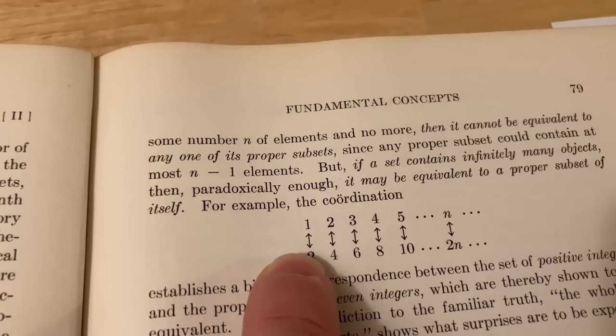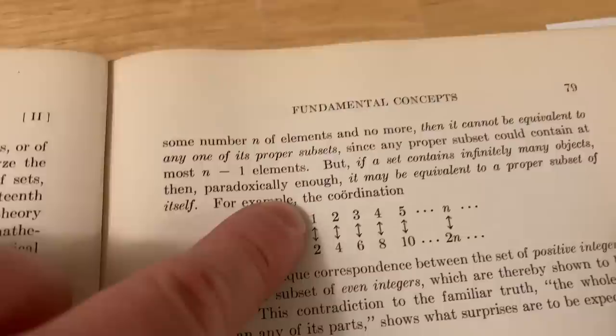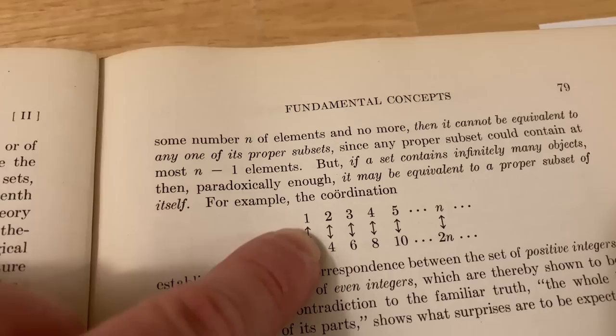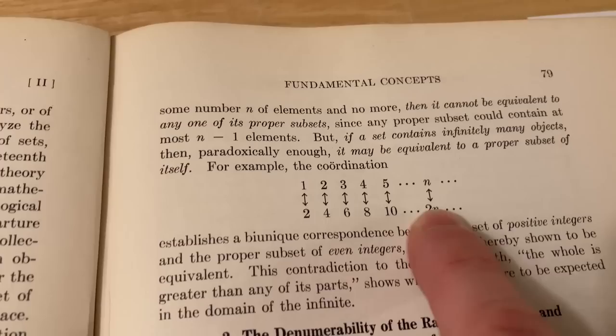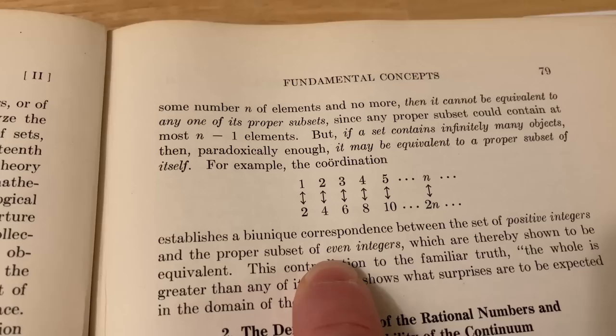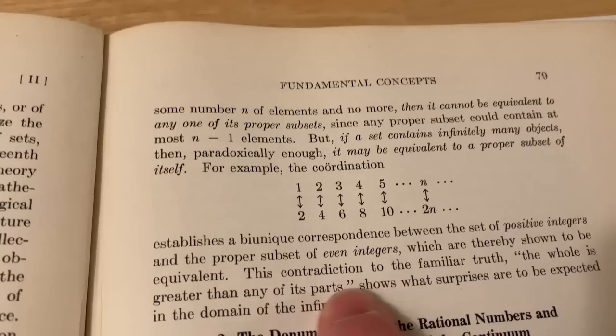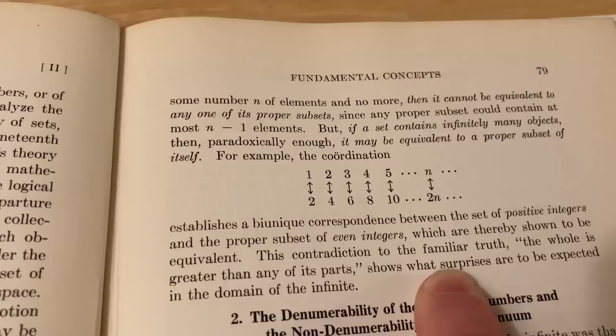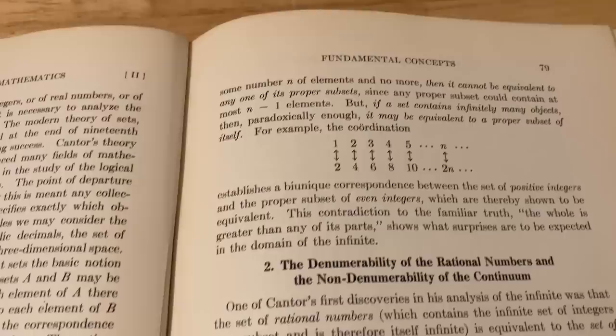And you can do that by simply listing the integers: one, two, three, four, five. And then to each integer you assign the following. So for one, you assign two. To two, you assign four. To three, you assign six. Basically you just double each integer. And you see you have this bi-unique correspondence between the set of positive integers and the proper subset of even integers, which are thereby shown to be equivalent. This contradicts the familiar truth: the whole is greater than any of its parts, and shows what surprises are to be expected in the domain of the infinite. I'm getting goosebumps. This guy, Courant, was amazing.